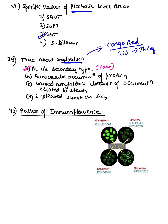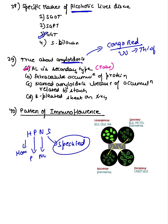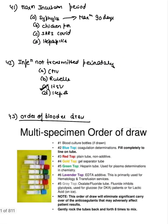Pattern of immunofluorescence — remembered as H-PENS: Homogeneous, Perinuclear, Nucleolar, and Speckled. Most likely the question was on speckled immunofluorescence pattern, as many students reported.